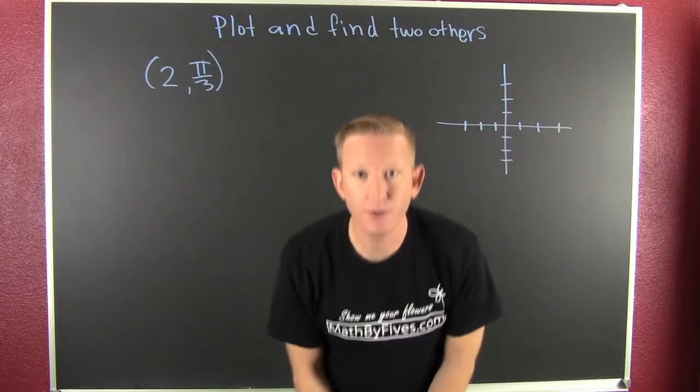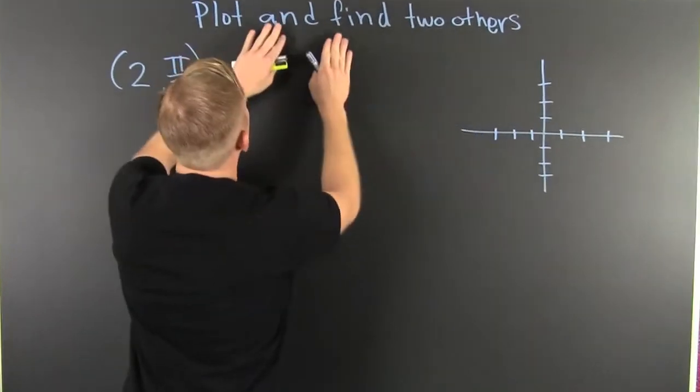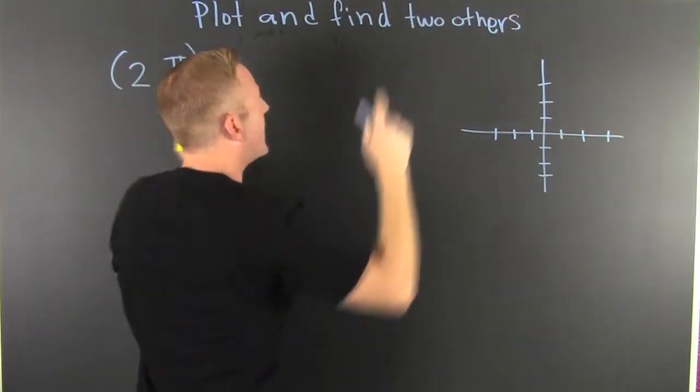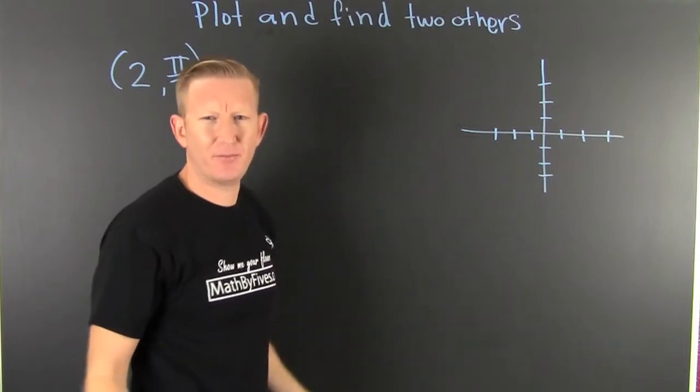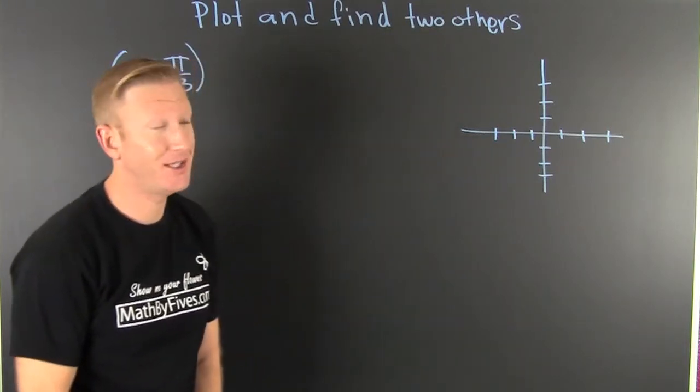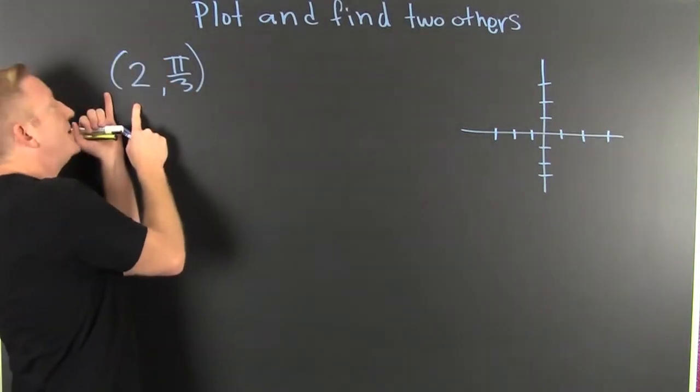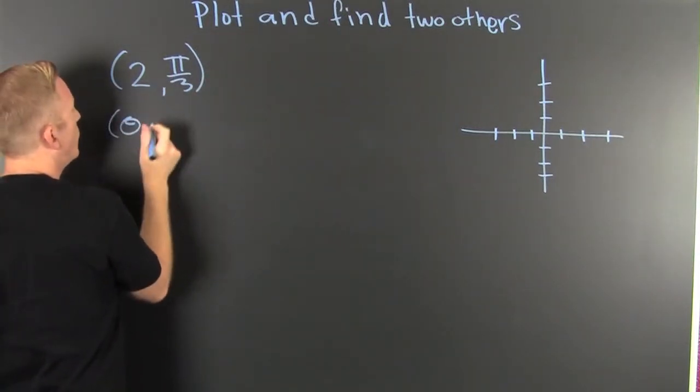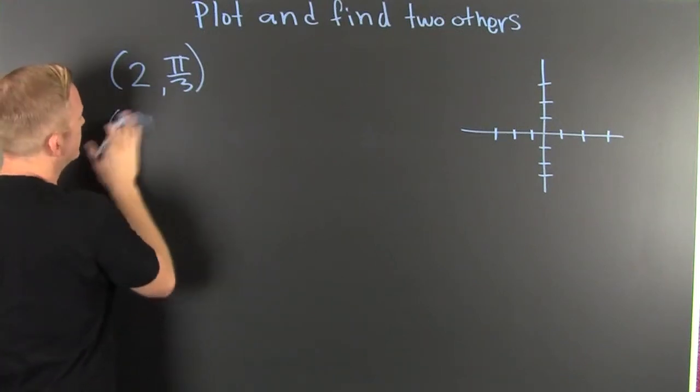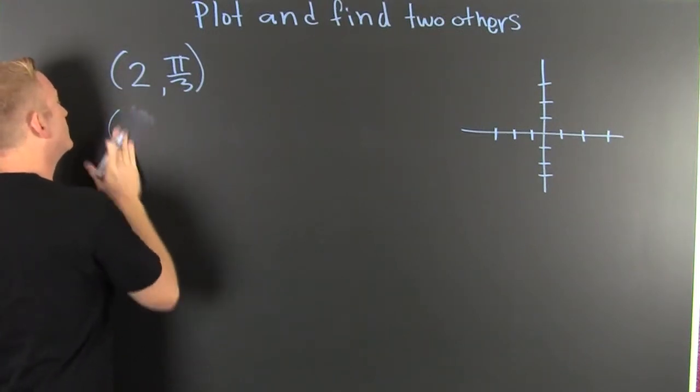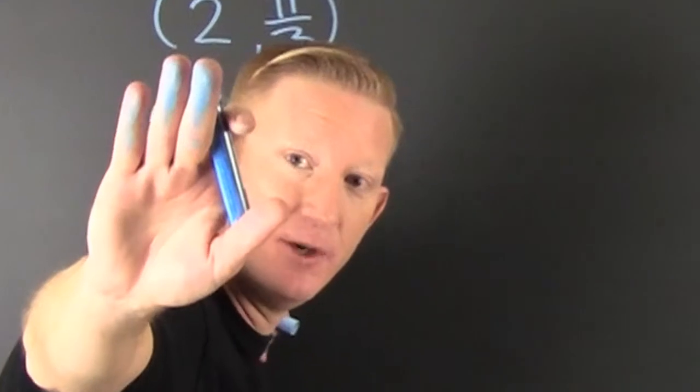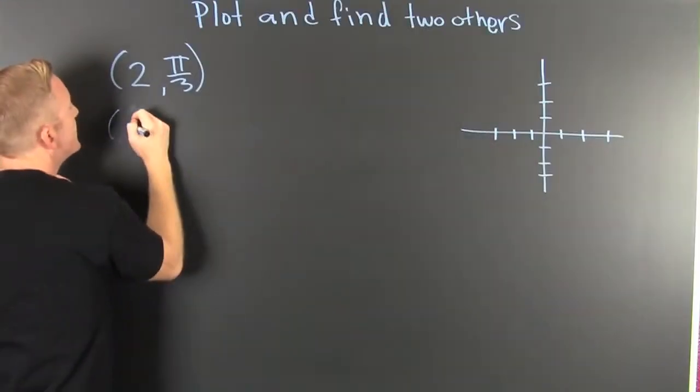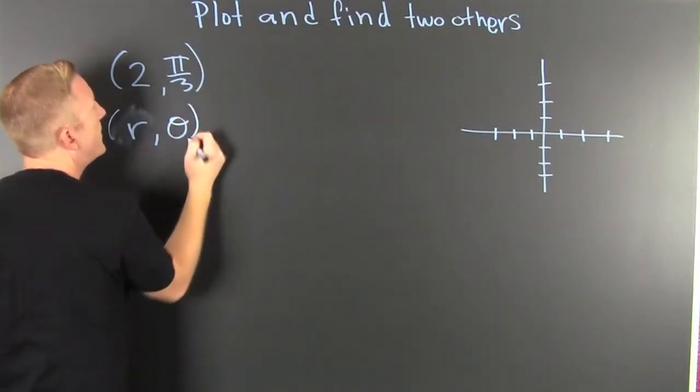What's next? We need some examples. You must be plotting something - plotting from polar coordinates. That's what they want us to do. They want us to plot and then find two others. Turns out polar coordinates are not unique. We need to plot (2, pi over 3). That's in the form r, theta.